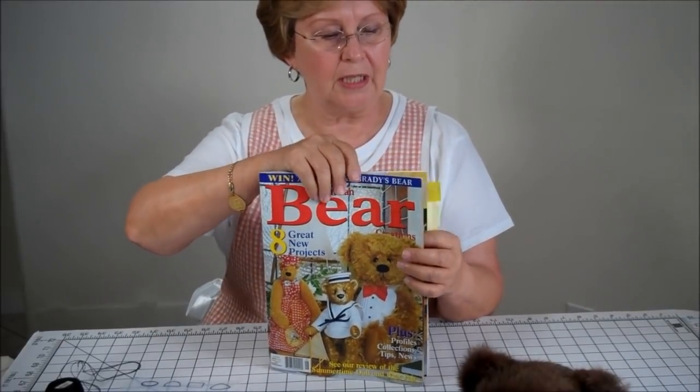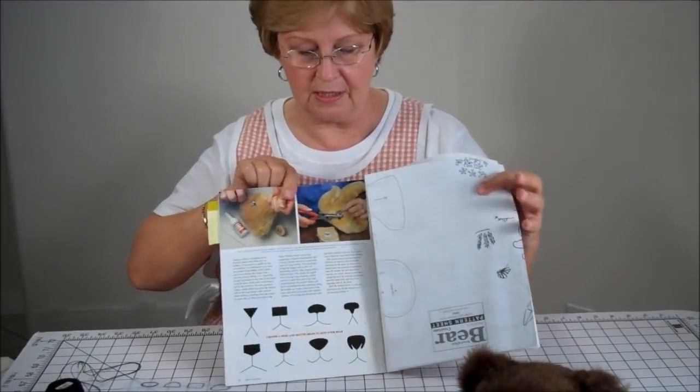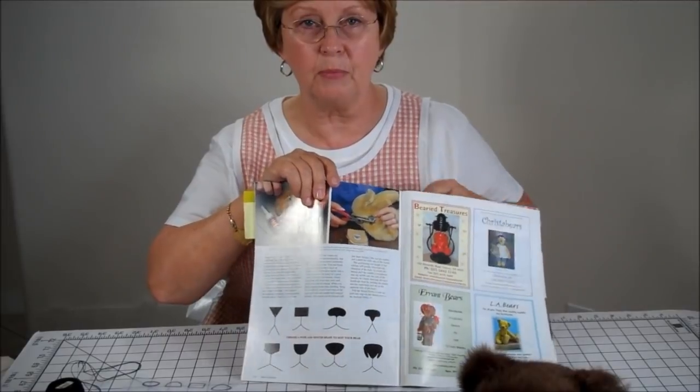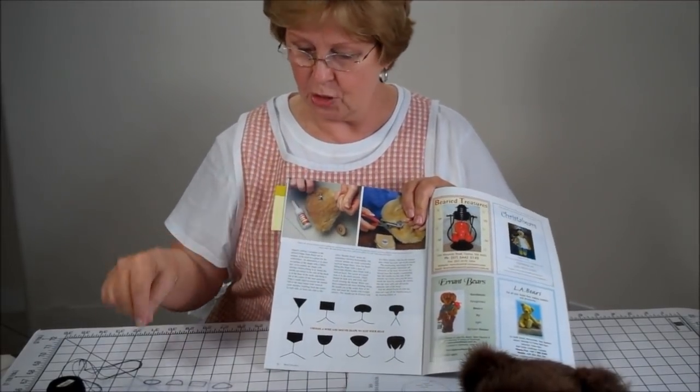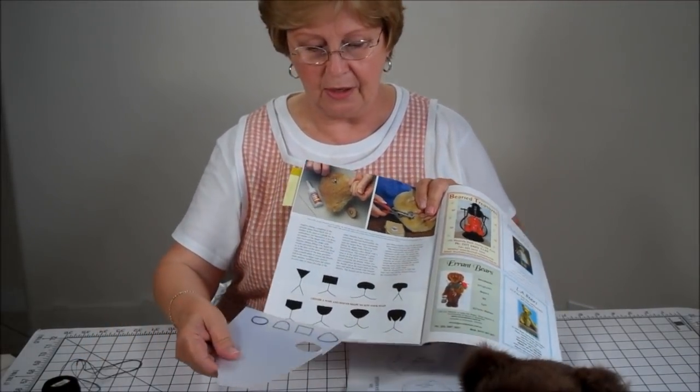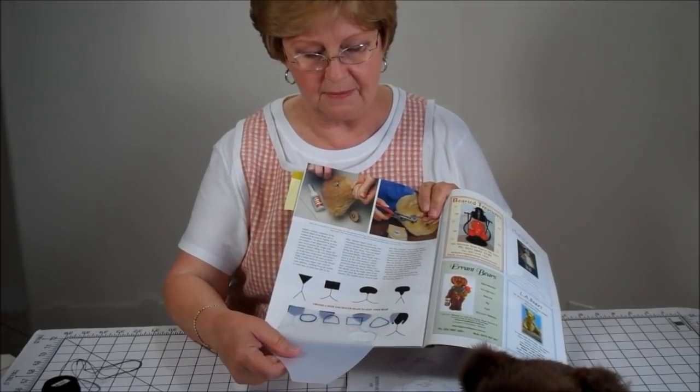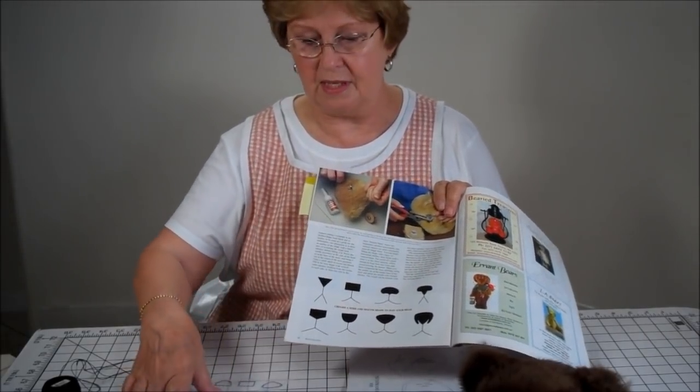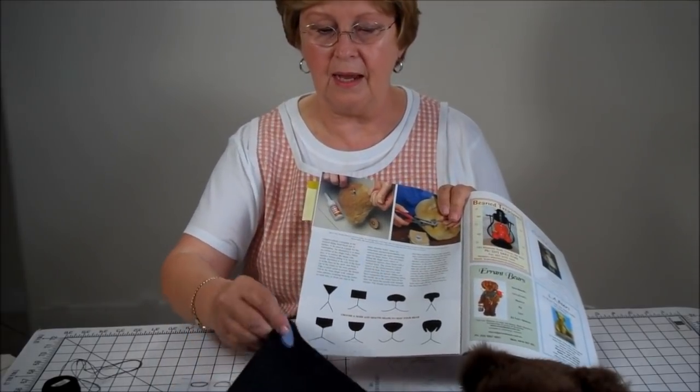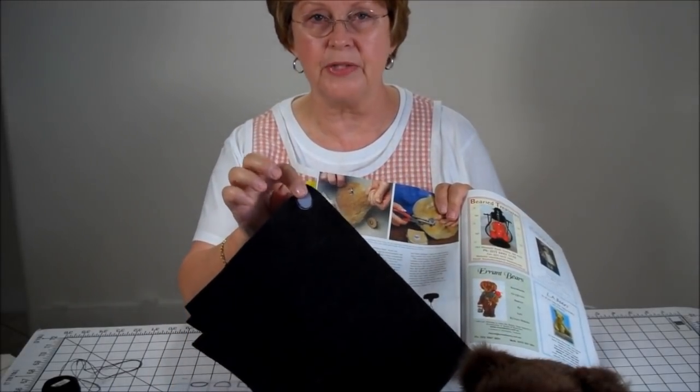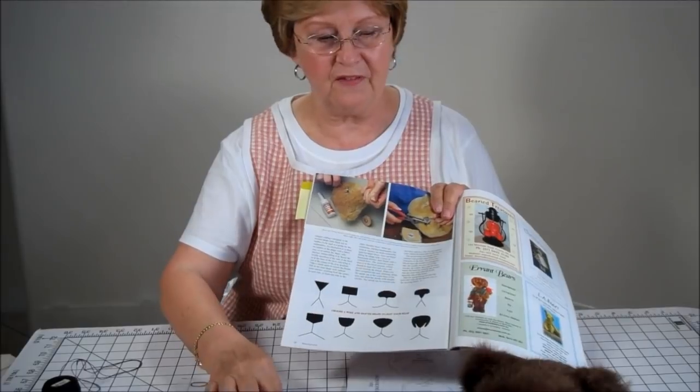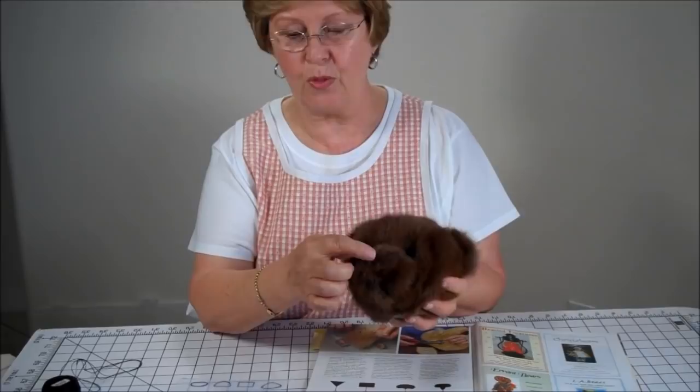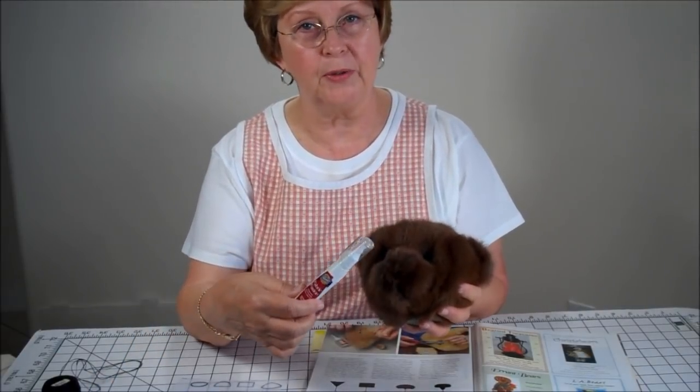We're going to look at how I do these. In my book of Henry, there's a page in here that gives the various types of noses that you can put on your bear. I trace them out onto my templates and I cut these out, the templates out, and then I put them on black felt.